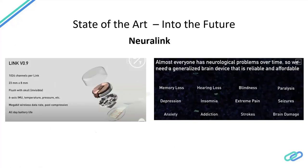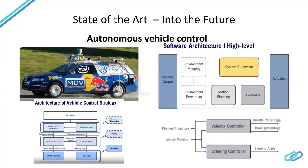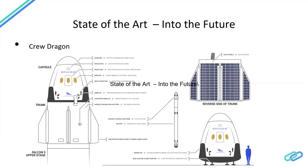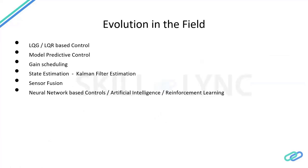As a controls engineer, you might work with those actuators in the future. Controls is truly everywhere — from space to the human body to autonomous vehicles. Looking ahead, there are advanced topics in controls: Model Predictive Control, gain scheduling, state estimation with Kalman filters. Sometimes you can't place a sensor where you need one, so you estimate the system state by modeling the plant and using Kalman filter estimation.